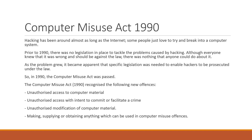The Computer Misuse Act recognises the following offences: unauthorised access to computer material, which means accessing a computer or system that you are not supposed to access; unauthorised access with the intent to commit or facilitate a crime, where you gain access to a computer and intend to do some damage to the computer or its files; and finally, unauthorised modification of computer material, which is where you change things on a computer that you are unauthorised to be on.